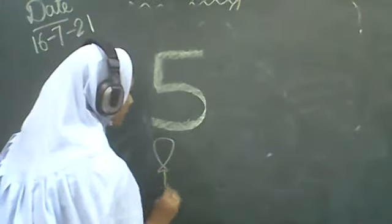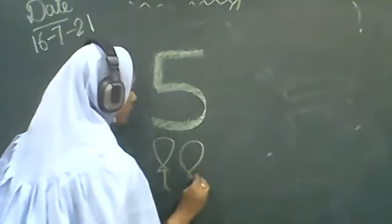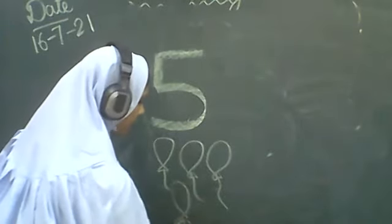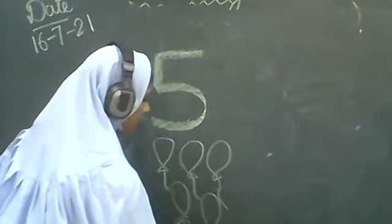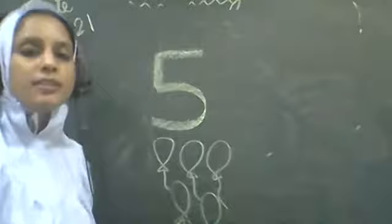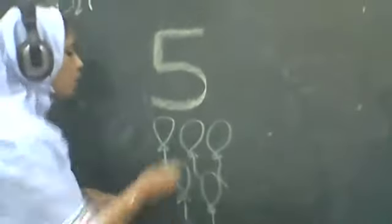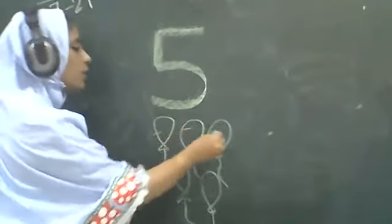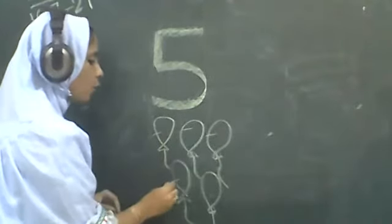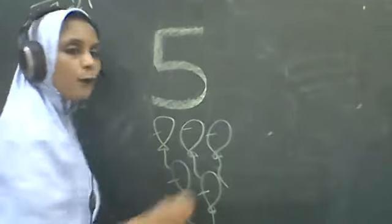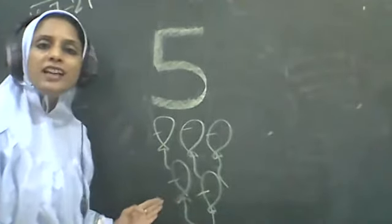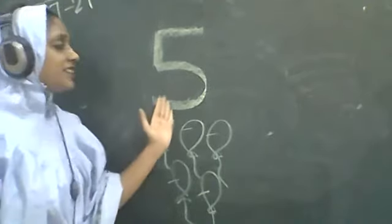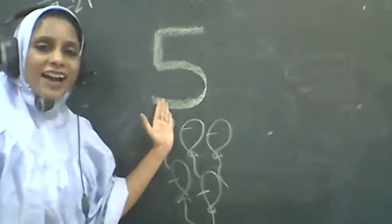So this is number five. Number five. Which number is this? Five. Now let's count the balloons. Count the balloons. One, two, three, four, five. How many balloons are there? Five balloons. This is number five.